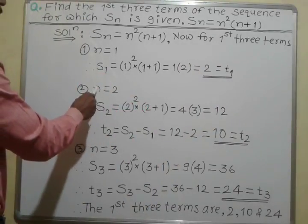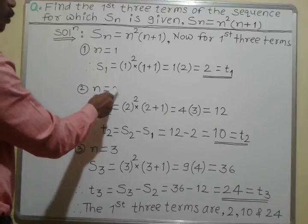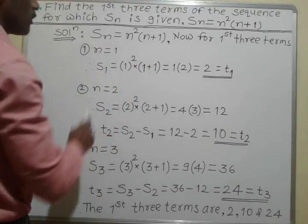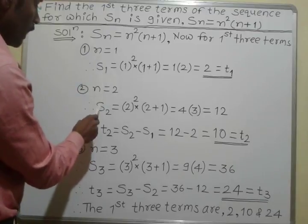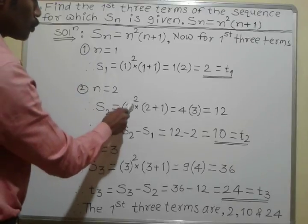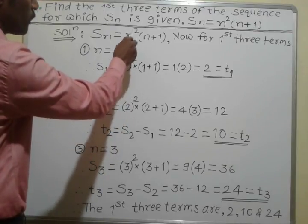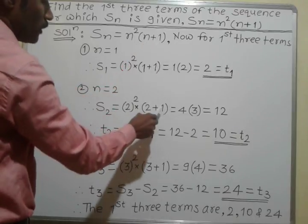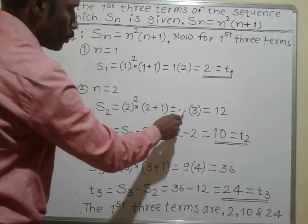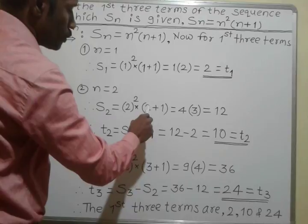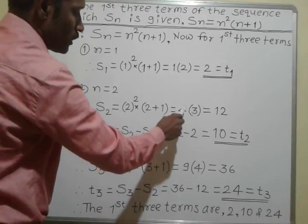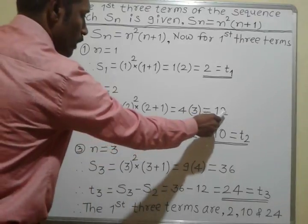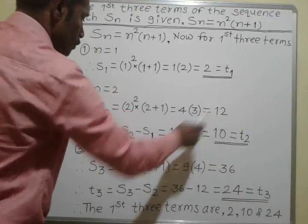Now I will put the value of n, that is 2, in this equation. S2 is equal to 2 square into 2 plus 1. 2 square is 4, and 2 plus 1 is 3. Therefore, 4 into 3 is equal to 12. This is the value of S2 — S2 is equal to 12.